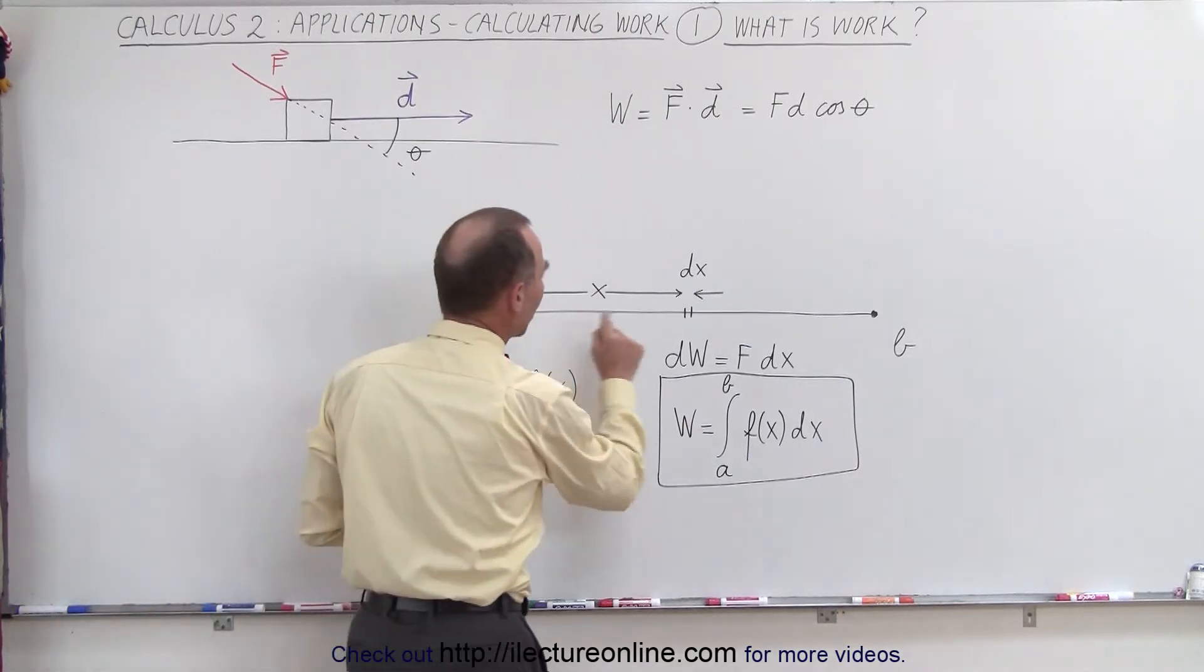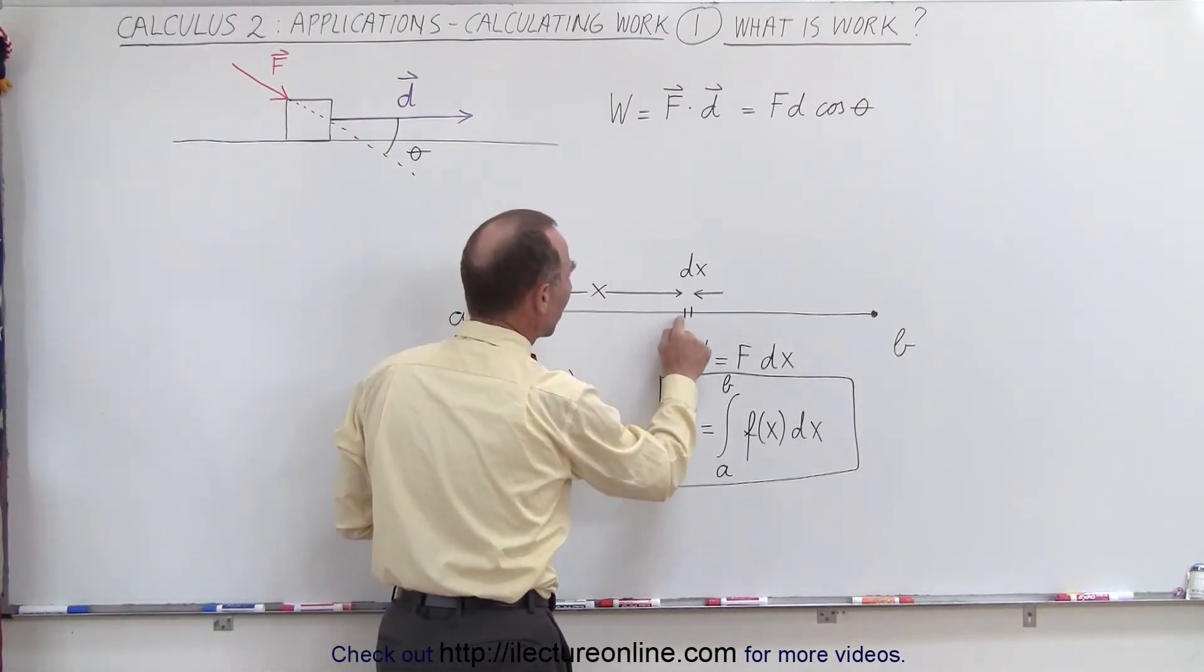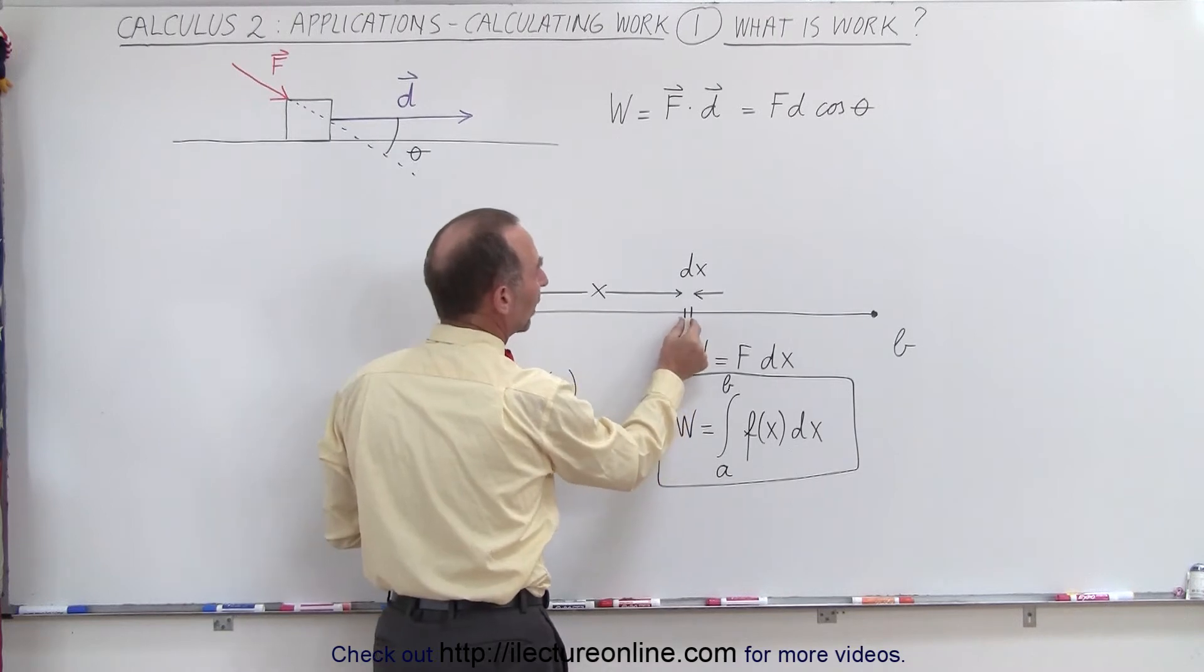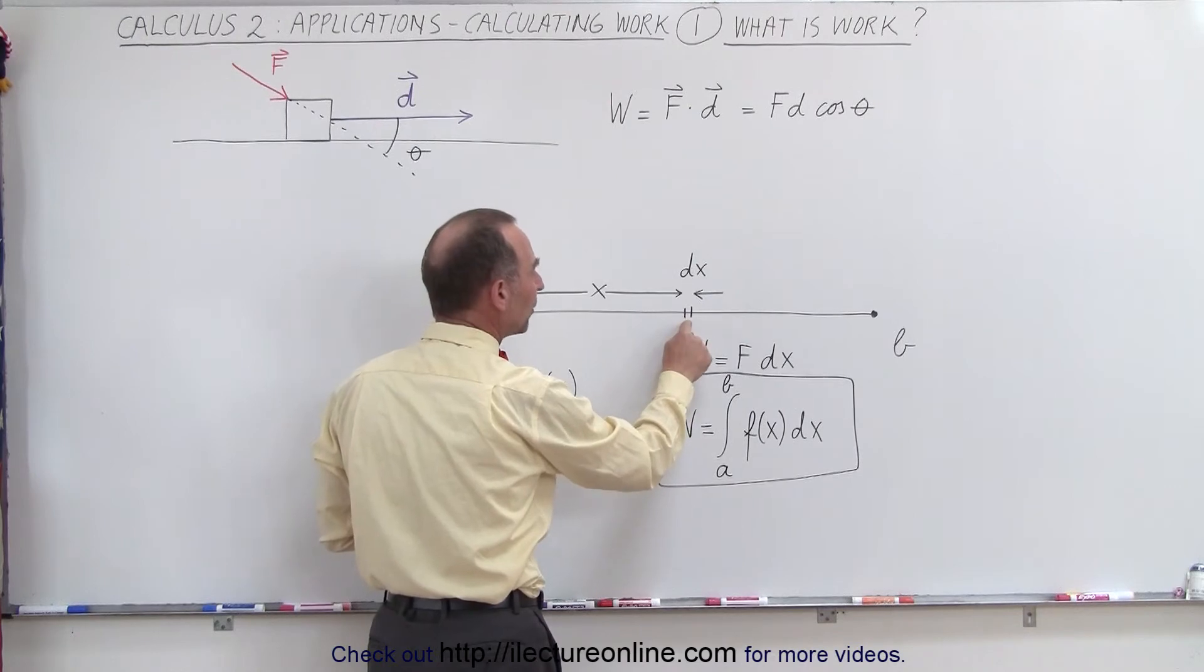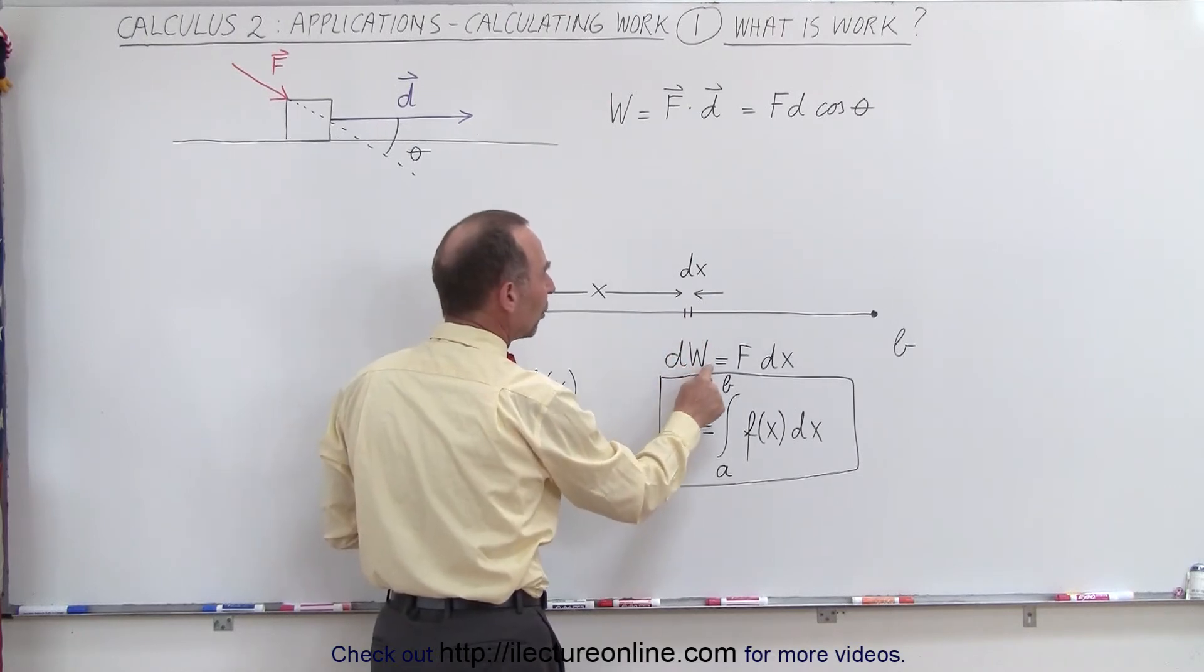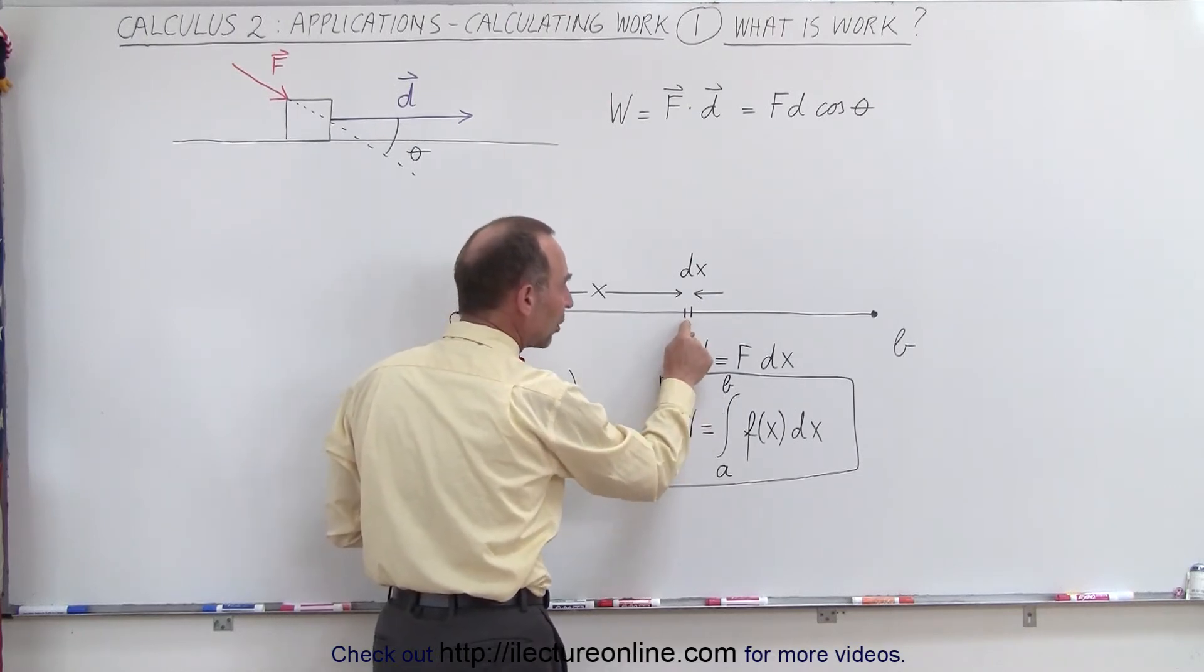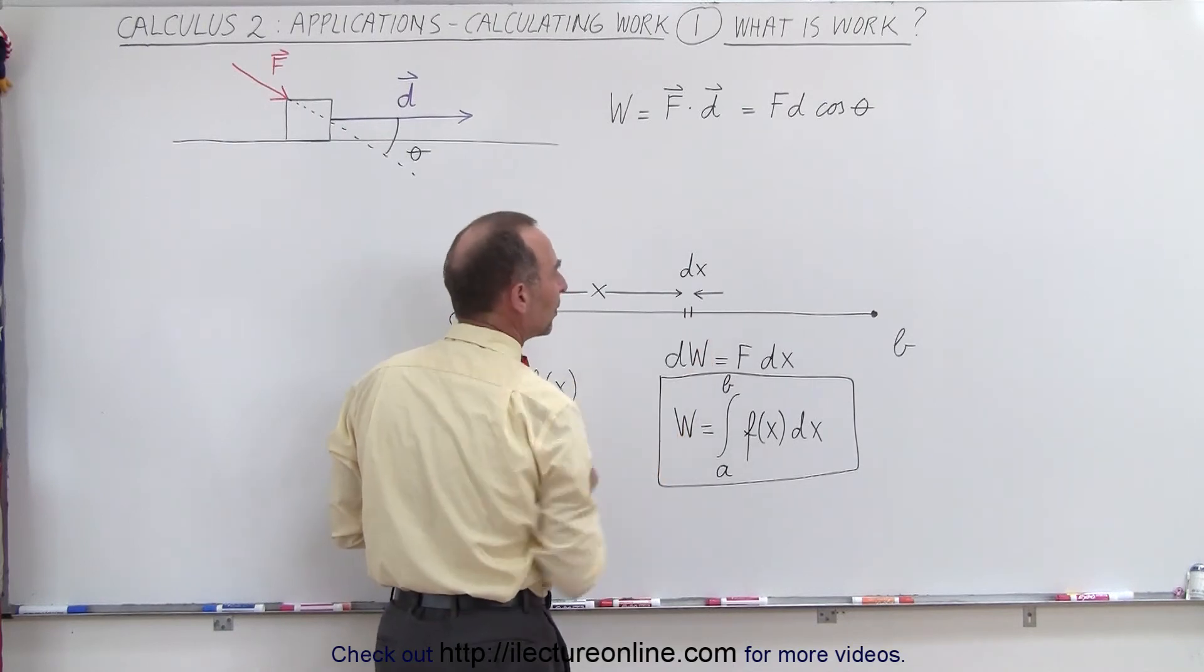Let's assume that we have now applied the force for a while and now we're at this location right here and we're applying the force for another small displacement dx. So a small amount of work will be done, let's call it dW, which is equal to the force at that particular location times the displacement dx.